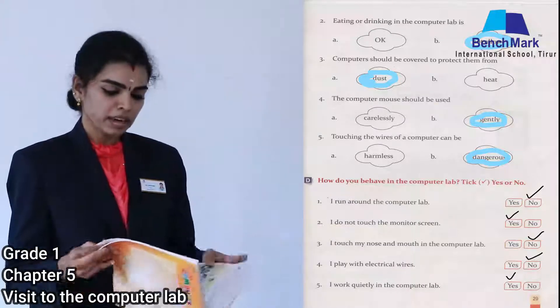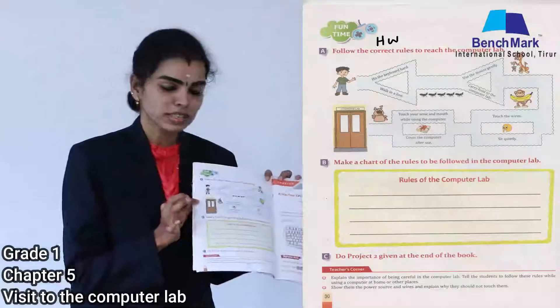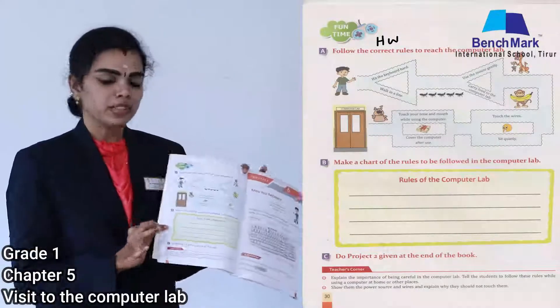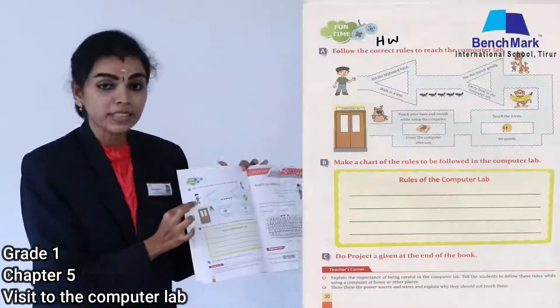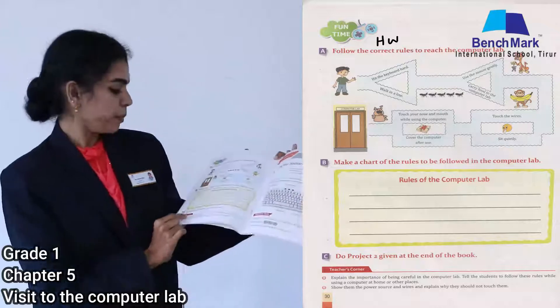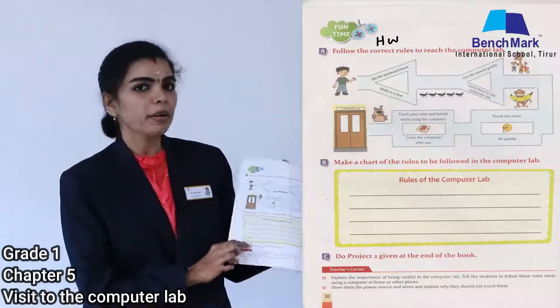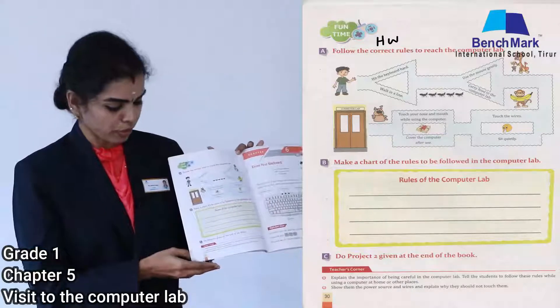Next we will see the fun time activity. Follow the correct rule to reach the computer lab — a boy needs to follow the correct rule to reach the lab. This is a homework for you. Also, make a chart of the rules to be followed in the computer lab. These two are homework for you to do at home. I hope the 'visit to the computer lab' chapter is clear. Follow these rules when visiting our computer lab. Thank you for listening — complete your homework and we will see you in the next class.